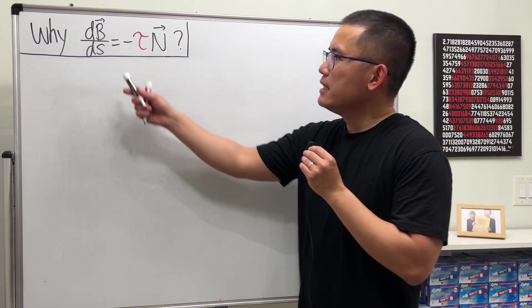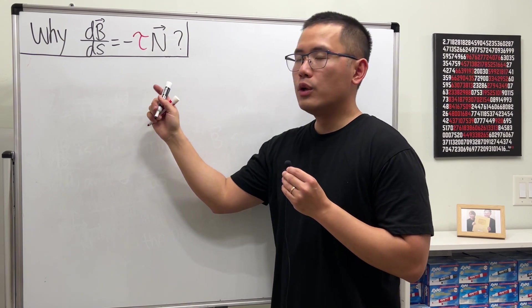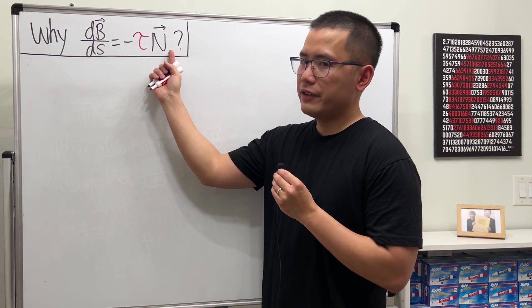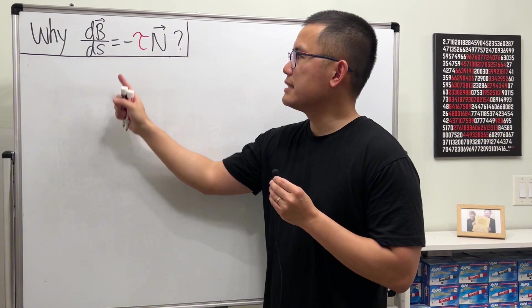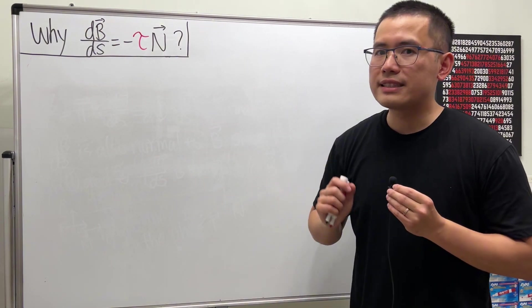Now we are going to see why dB/ds is equal to negative tau times n. Notice this is just a factor being a constant multiple of the other factor, and this implies that these two factors are parallel. And that's what we are trying to show.